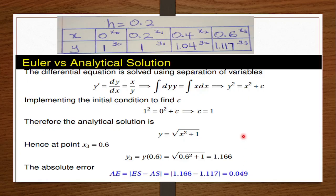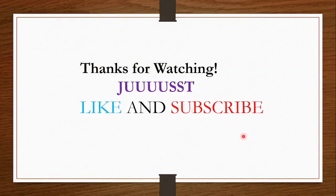The error tells us that the Euler method is not very accurate. There are other methods we can use to make our computations much closer to the exact solution. That's basically the main idea of the Euler method. If you have any questions, be sure to leave them in the comment section. Like and subscribe — until next time!